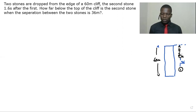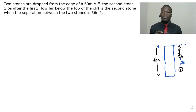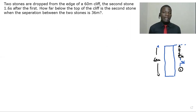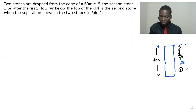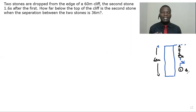We are going to say the first stone is dropped at time t, because we don't know the time — we just know that after 1.6 seconds that's when the second stone was dropped. So the first stone was dropped at time t, meaning the second stone is going to be dropped at time t minus 1.6 seconds.